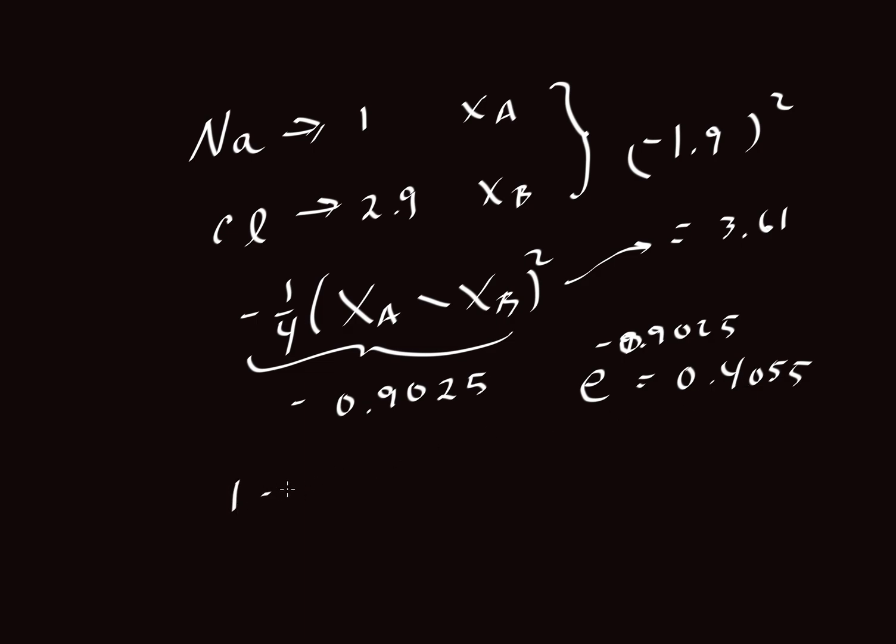Then 1 minus 0.4055 equals 0.594. If we multiply by 100, we get 59.4% ionic character. This means that for the sodium-chlorine bond, sodium and chlorine bond together in a way that is 59.4% ionic.